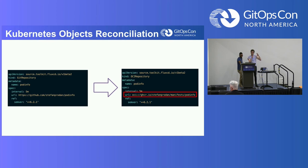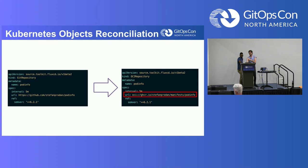When moving from a Git repository as your source to OCI, it's really just changing the URL. Instead of pointing to your Git URL, you point to the URI for OCI. Semver constraints, ranges, and everything work exactly the same.